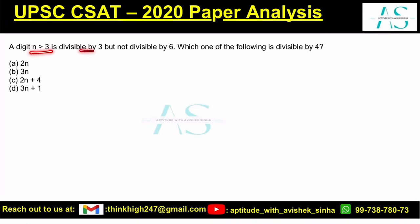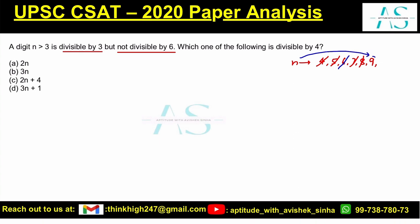n greater than 3 is divisible by 3 — greater than 3 ka matlab hai the values for n can be 4, 5, 6, 7, 8, 9. Divisible by 3 ka matlab hai: 4, 5, 7, and 8 cannot be the values as they are not divisible by 3. 6 will also not be the value since it is divisible by 6. So n is definitely 9.